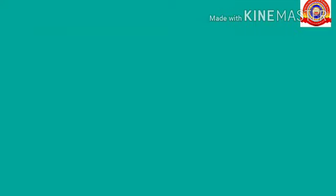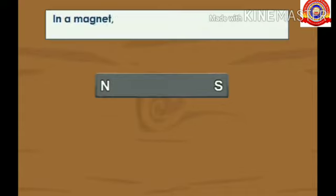Next we are going to discuss another property of magnets. Like poles attract and unlike poles repel each other. Students, magnetic poles always exist in pairs. In a magnet, north and south poles exist in pairs. They cannot be isolated.